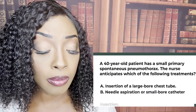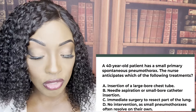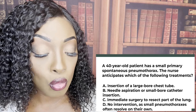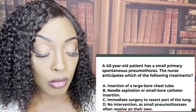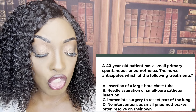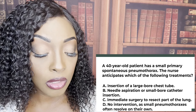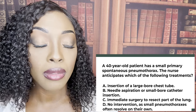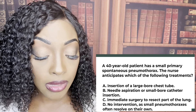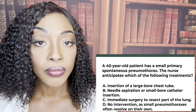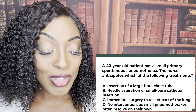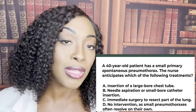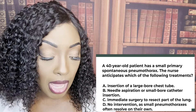A 40-year-old patient has a small primary spontaneous pneumothorax. The nurse anticipates which of the following treatments? A, insertion of a large bore chest tube. B, needle aspiration or small bore catheter insertion. C, immediate surgery to resect part of the lung. Or D, no intervention, as a small pneumothorax often resolves on its own. The correct answer is D — and usually you never choose 'do nothing,' but sometimes you just continue to monitor.